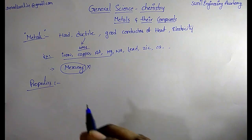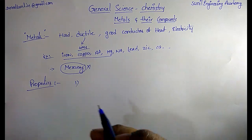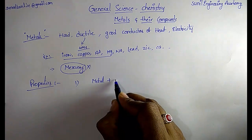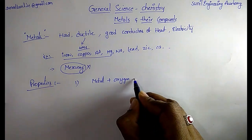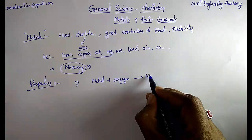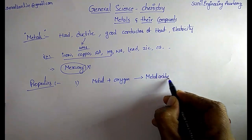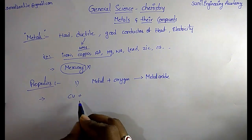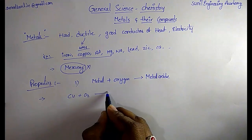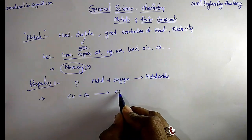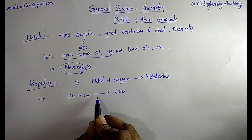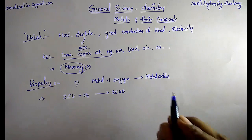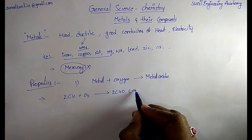Coming to the properties of metals — the first property is reaction with oxygen. When metals combine with oxygen, a metal oxide is formed. For example, if you take copper and it reacts with oxygen, copper oxide is produced. Balancing this equation: 2Cu + O₂ → 2CuO.